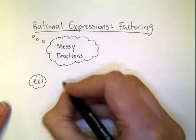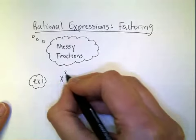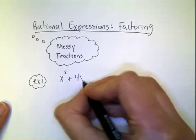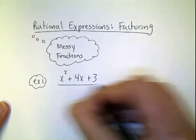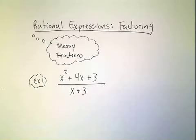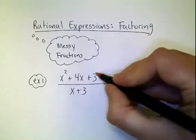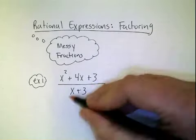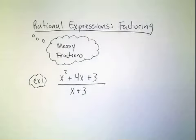We have x squared plus 4x plus 3, all over x plus 3. Probably one of the most common mistakes people will make is they will think they could cross out the 3's or the x's. They'll pair them up. But you really can't do that.